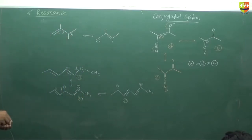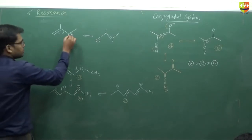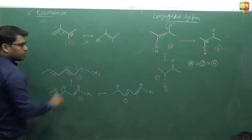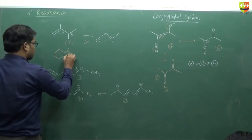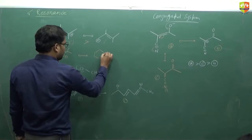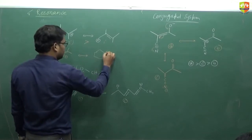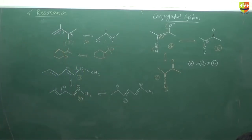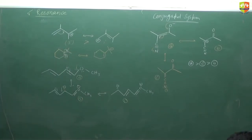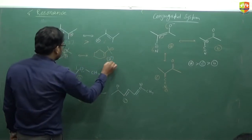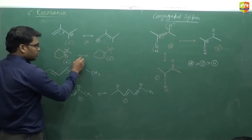Which one is more stable? The first one, because it is three degrees — one negative. The first one is most stable. It is exactly determined by whether a positive or negative charge is present. First one is three degree, and the other is two degree, so this one is more stable — carbonite.